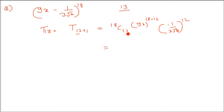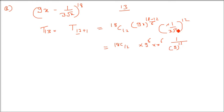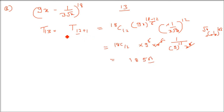Continuing: (-1)^12 = 1 (even power), and (1/(3√x))^12 = 1/(3^12 · x^6). So x^6 in the numerator cancels x^6 in the denominator, and the T13 term is independent of x. The result is 18C12 · 9^6 / 3^12, which evaluates to 18564 — a pure coefficient with no x.